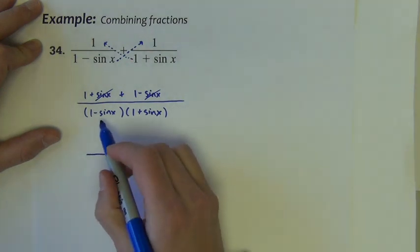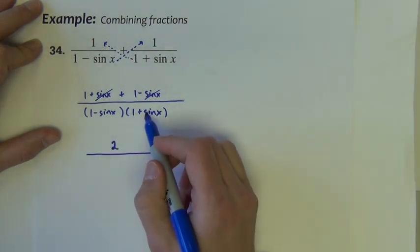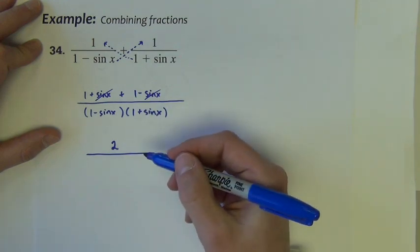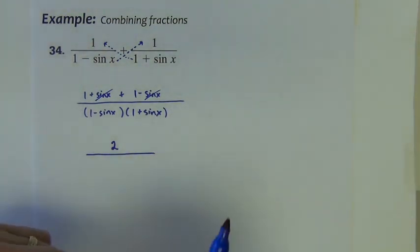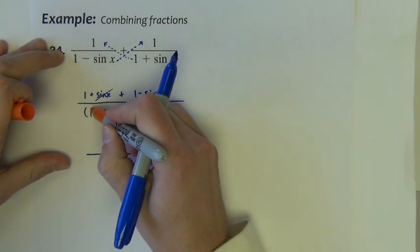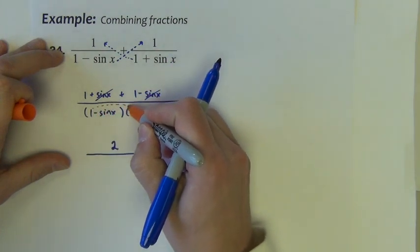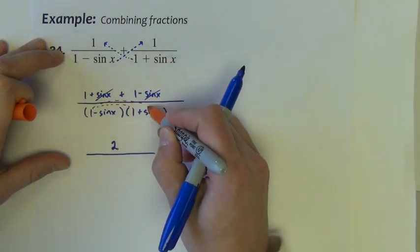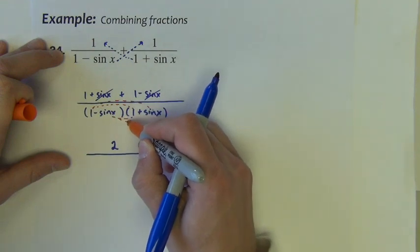In the denominator, notice this is just a binomial times a binomial. You could think to yourself, this is like a foil problem. When we foil, we do first, outside, inside, last.